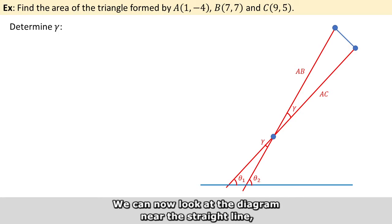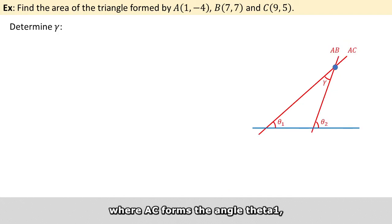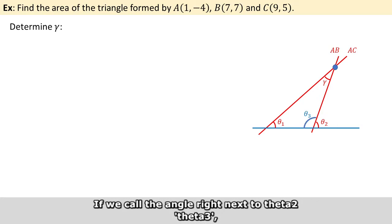We can now look at the diagram near the straight line where AC forms the angle theta 1 and AB forms the angle theta 2. If we call the angle right next to theta 2, theta 3, I suppose you will know that the sum of theta 2 and theta 3 equals 180 degrees.